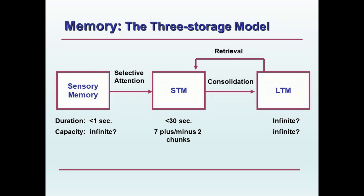Sensory memory has a duration of less than a second, and we really don't know the limits of its capacity. Short-term memory has a duration of less than 30 seconds unless we engage in maintenance rehearsal — repeating something to ourselves over and over. Without maintenance rehearsal, information stays in short-term memory less than 30 seconds. Its capacity is often referred to as the magic number 7 plus or minus 2 chunks. Long-term memory has effectively infinite duration and infinite capacity, as we really don't know the limits of either.